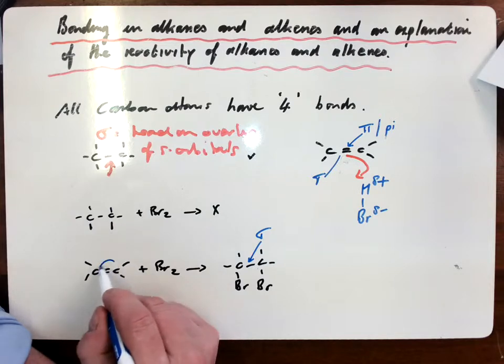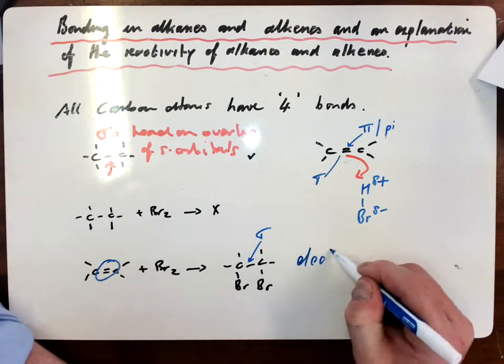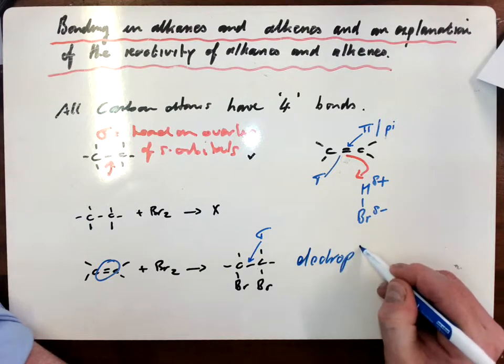So the bromine can attack this weaker pi bond in the high dense negatively charged region between the two carbons. And form your, what we call, addition product, through the mechanism, and I'm sure you'll all look at the mechanism videos.